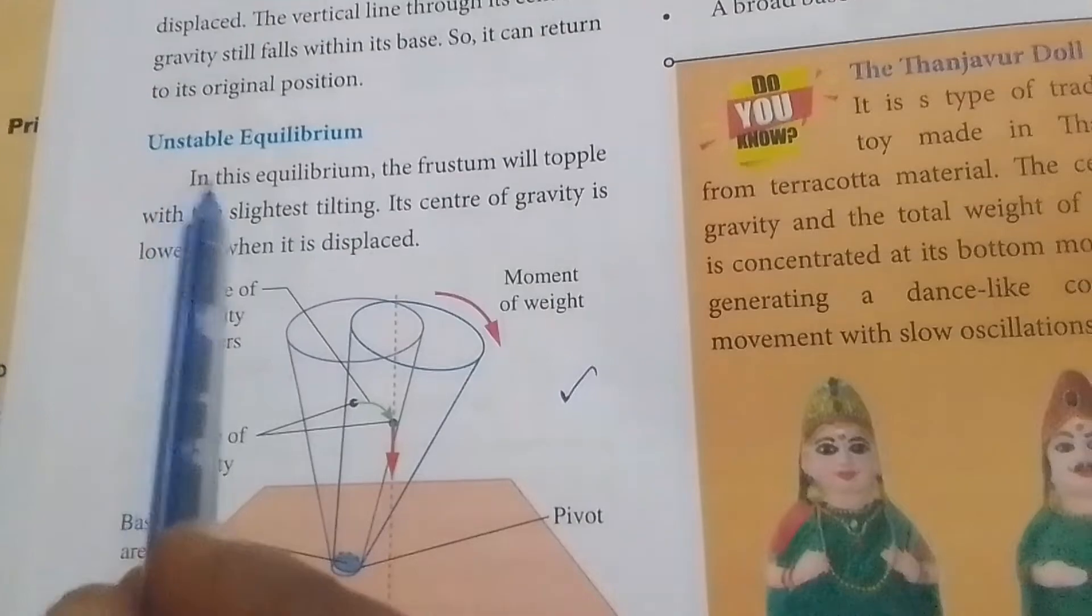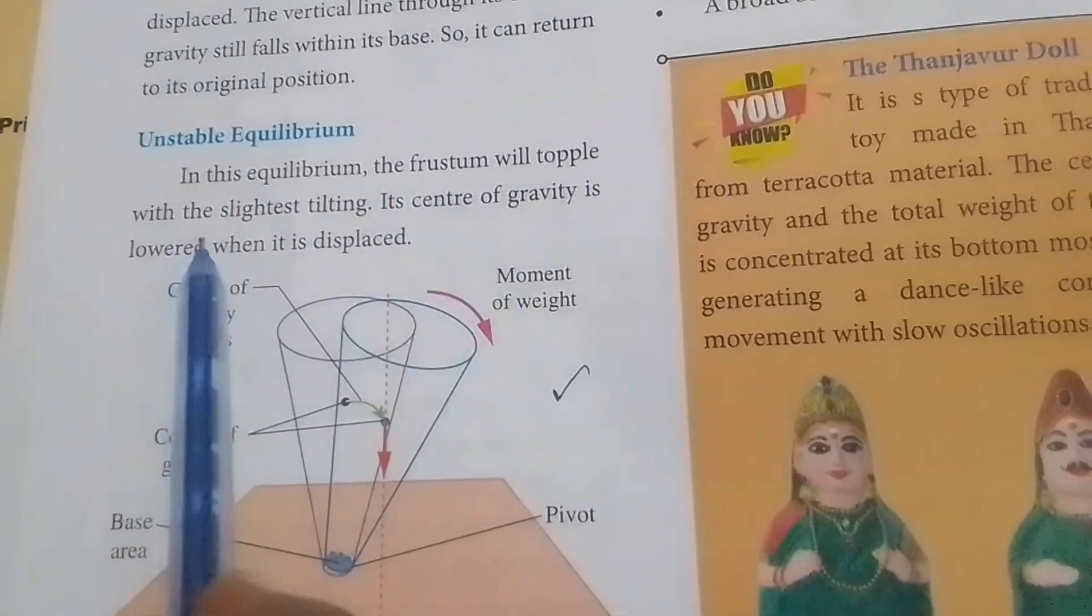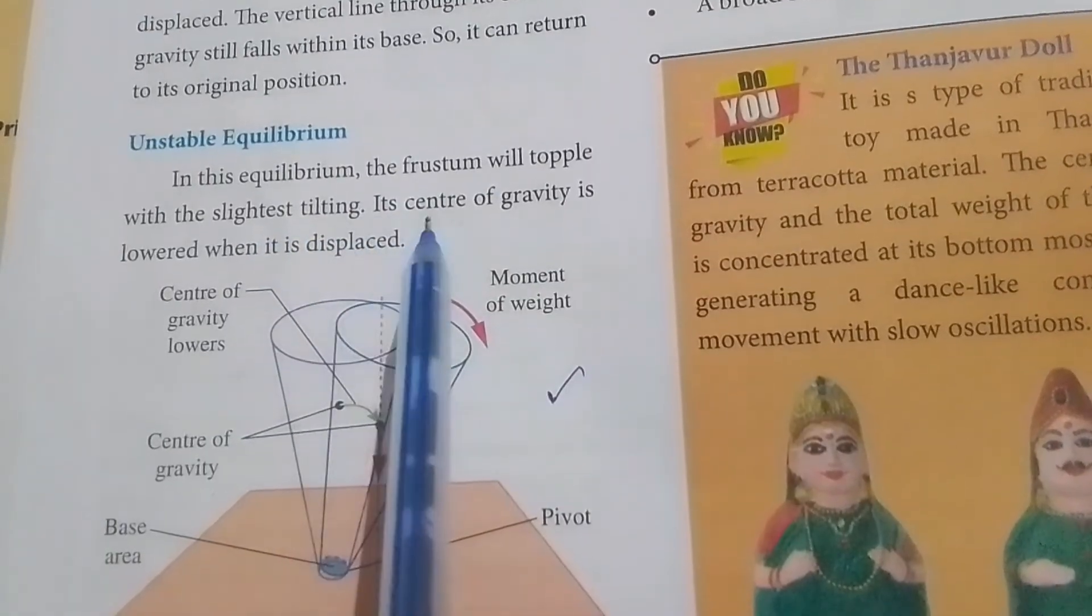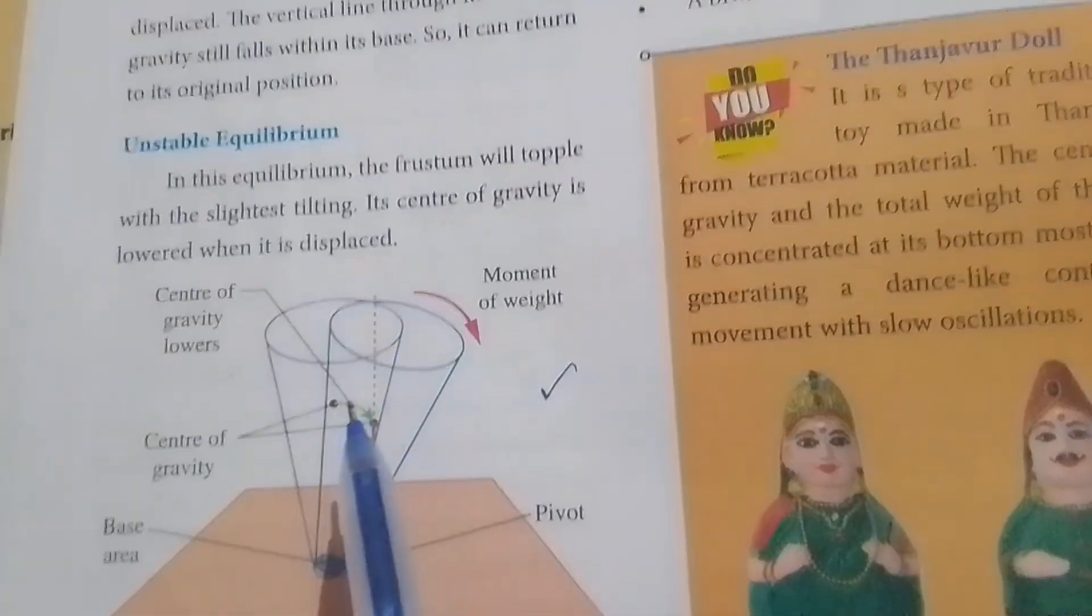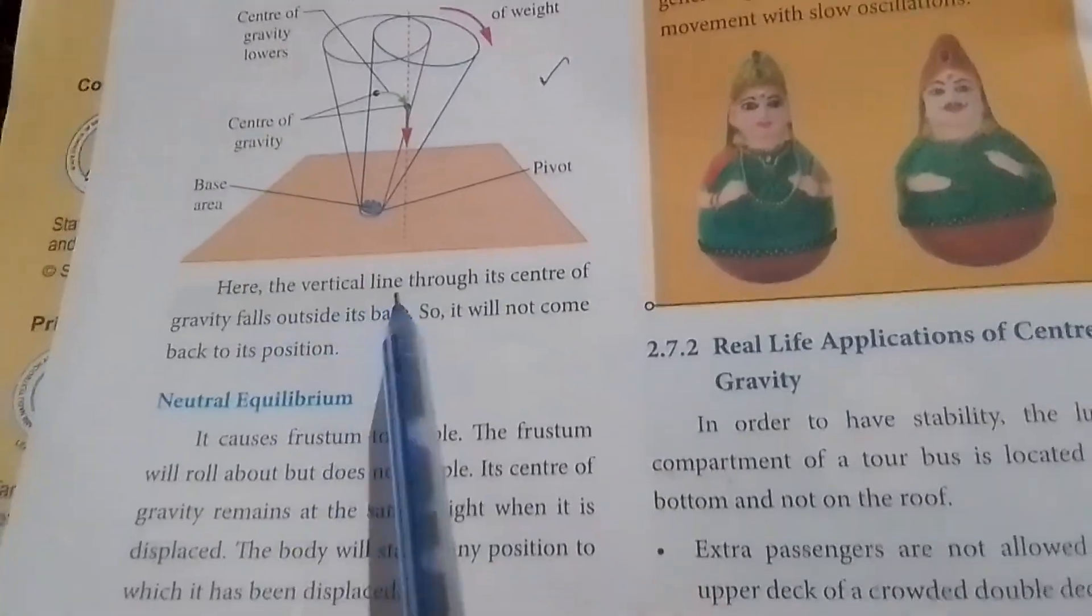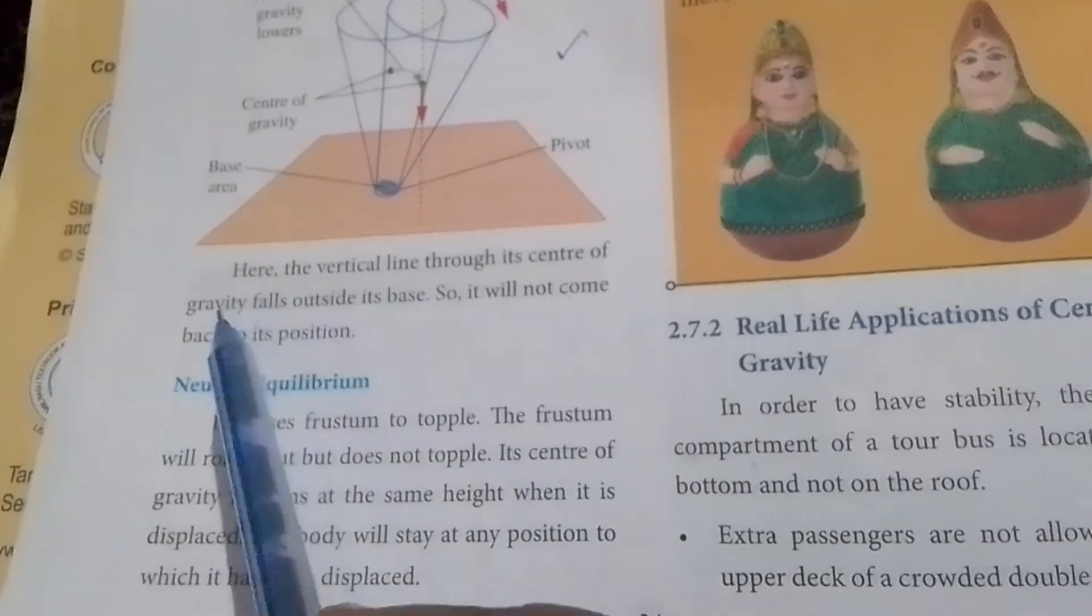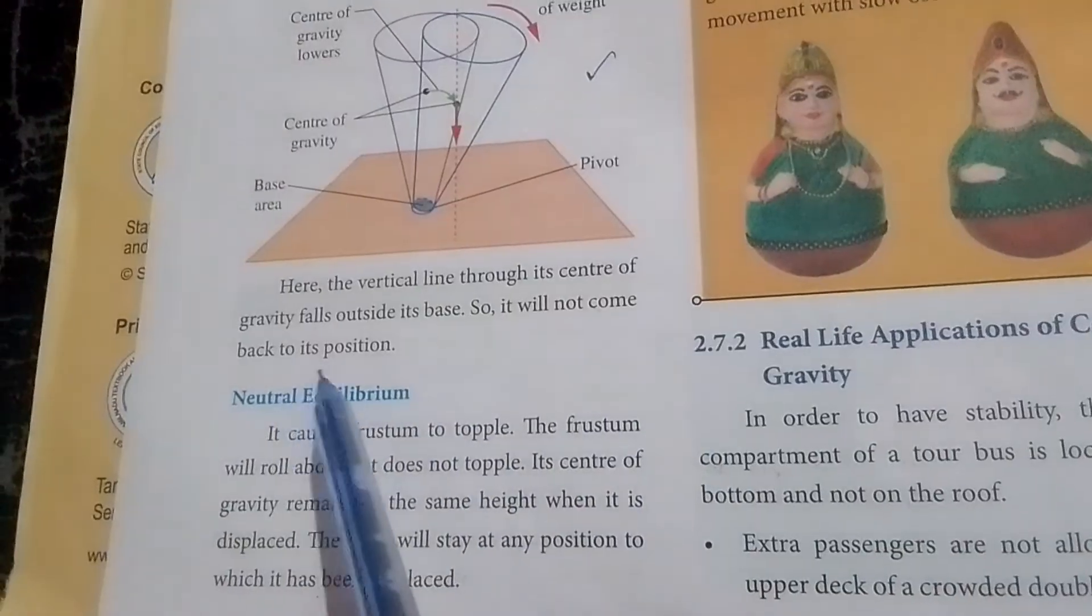Unstable equilibrium: In this equilibrium, the frustum will topple with the slightest tilting. Its center of gravity is lowered when it is displaced. Here, the vertical line through its center of gravity falls outside its base, so it will not come back to its position.